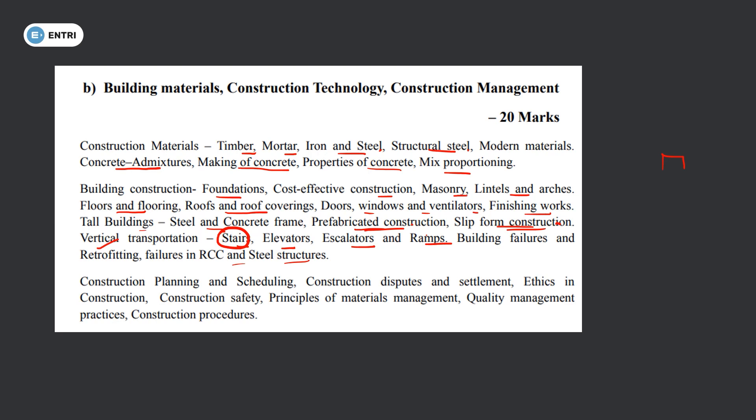This covers building materials and construction technology. Construction Management includes construction planning and scheduling, construction disputes and settlement, ethics in construction, construction safety, principles of material management, quality management, and construction procedures. This subject is worth 20 marks covering all 3 topics.